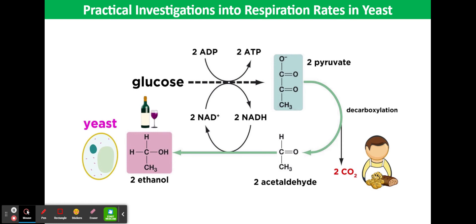For yeast cells to divide, they require ATP, and the rate of reproduction depends on the amount of ATP available. We would expect yeast to have a faster rate of reproduction under aerobic conditions.